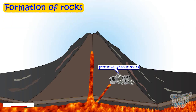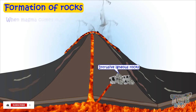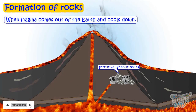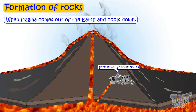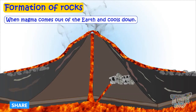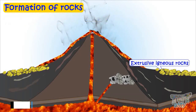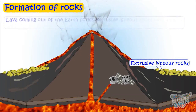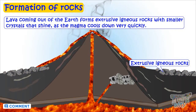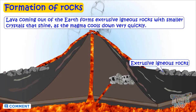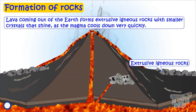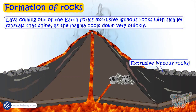And when this magma comes out of the earth and cools down and crystallizes, it forms extrusive igneous rocks. Lava coming out of the earth forms extrusive igneous rocks with smaller crystals that shine.